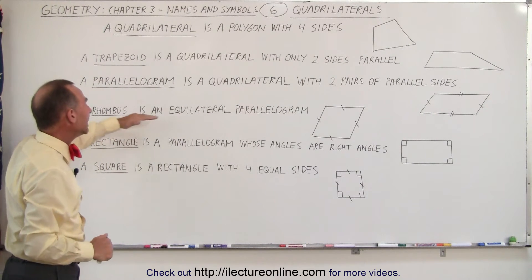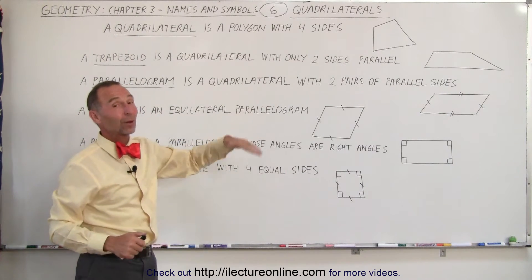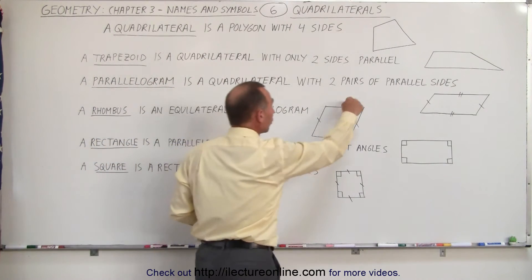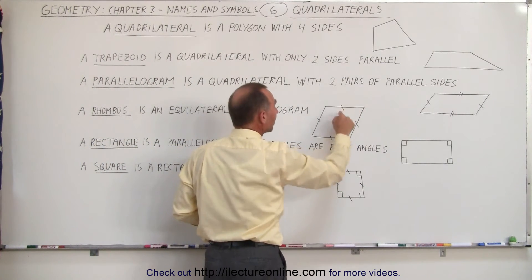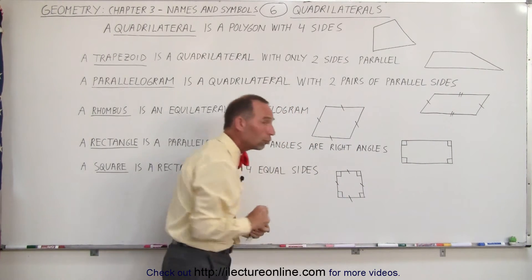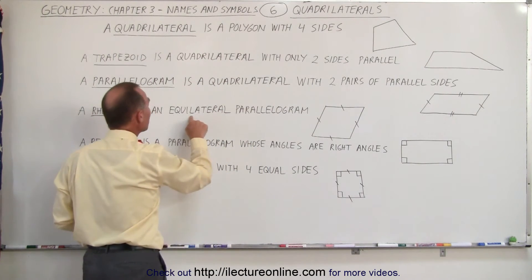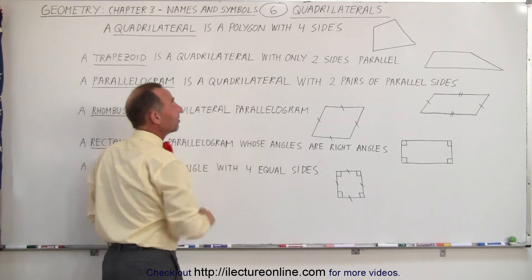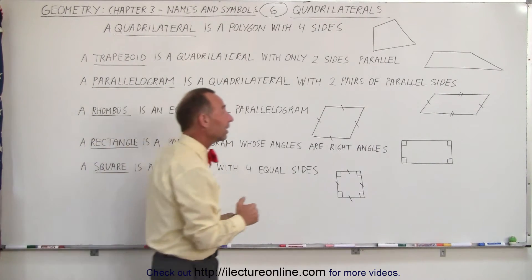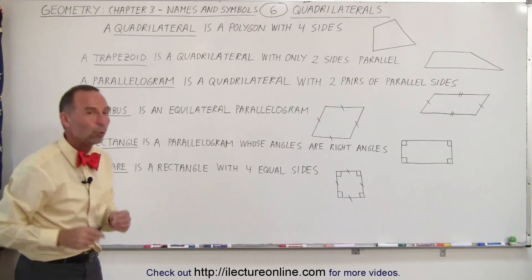A rhombus is an equilateral parallelogram — that's quite a tongue twister! That means it's a parallelogram where the top and the bottom side are parallel to one another and the left and the right side are parallel to one another, but also all the sides must be equal in length. Equi means equal, lateral means side, so all four sides must be equal in length. That's not the case for a parallelogram, but it is the case for a rhombus.